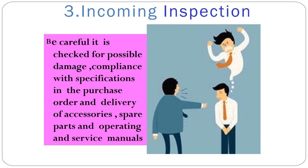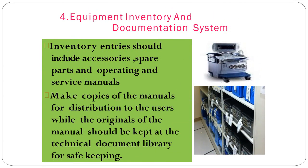The third component is incoming inspection. The received item is inspected for damage and compliance with specifications in the purchase order. Delivery of accessories and spare parts is verified, and the operating and service manual must accompany the item. Inventory entries are then made in the documentation system, including details of accessories, spare parts, and manuals. Copies of the manual are distributed to users, while originals are kept in the document library.